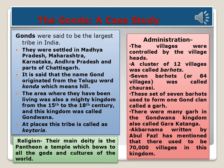The main deity of the Gonds is the python, and they had a temple that incorporated gods and cultures from across the world. In their administration, villages were controlled by village heads. A cluster of 12 villages was called a Barhot. Seven Barhots, or 84 villages, formed a unit called Chaurasi. These seven Barhots together formed one Gond clan. The Gondwana Kingdom had many such clans. The Ain-i-Akbari, written by Abul Fazal, mentions that there used to be 70,000 villages in this kingdom.